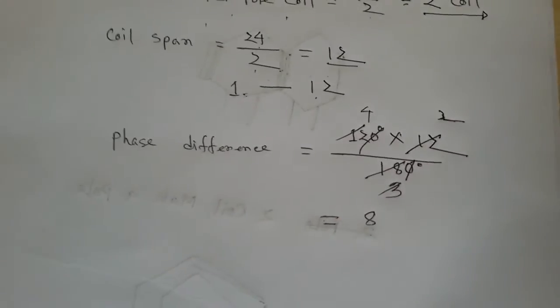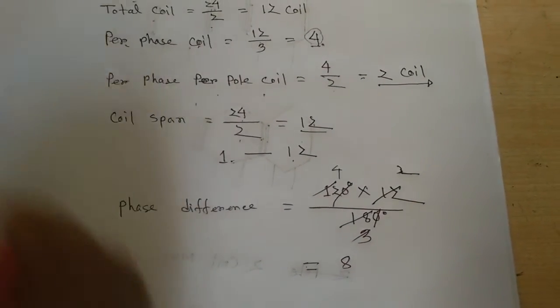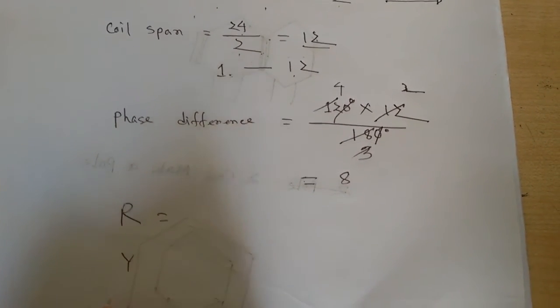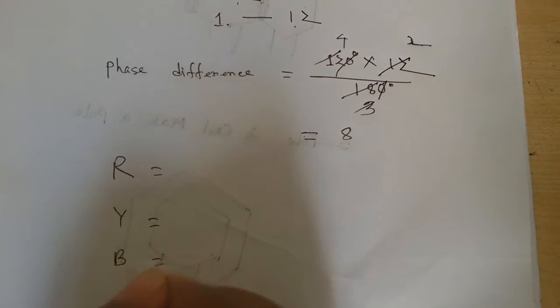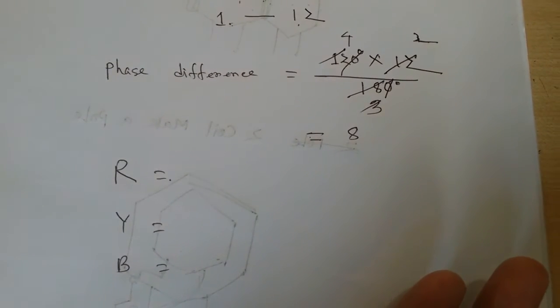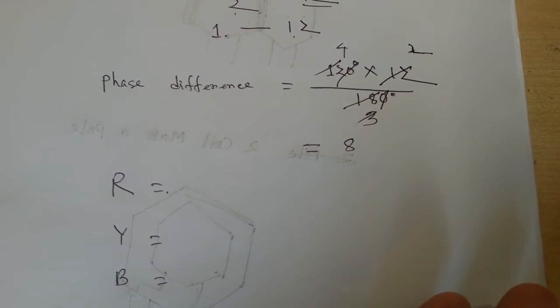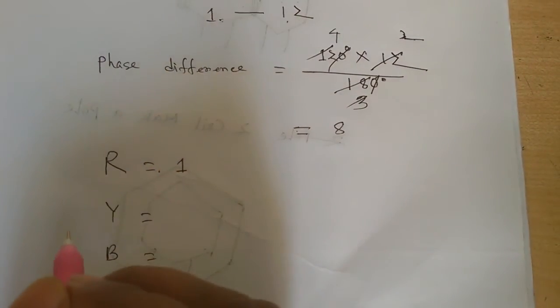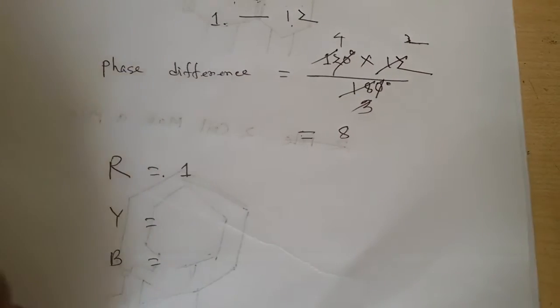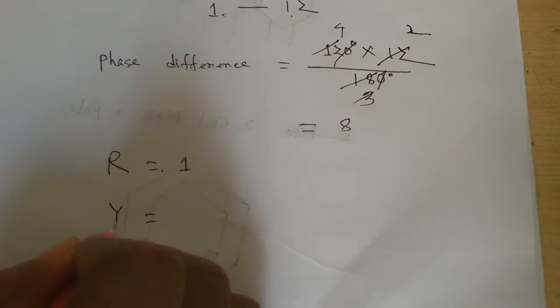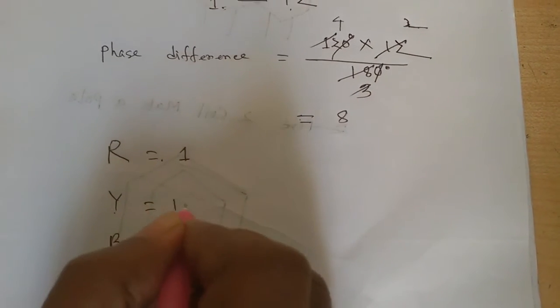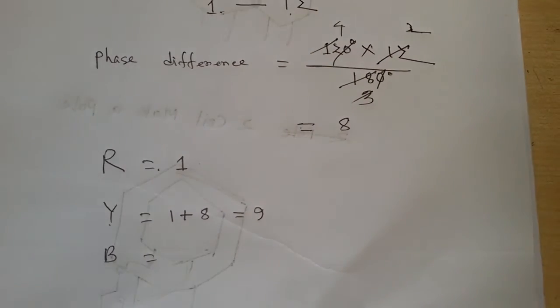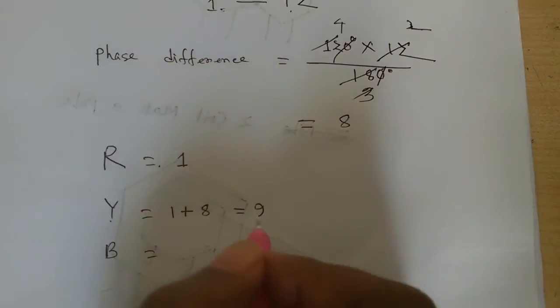Phase difference is 3-phase electrical degree 120 degree into coil span 12 and divided by 180 degree per coil degree. Now calculate, here is 8. How to use this 8? Here is total 3 phase, that means R, Y and B. If I start R is 1 slot, you can use any other slot. Now I start here 1 slot. Just suppose it is 1 slot. So Y slot is start 1 plus 8, so 9.